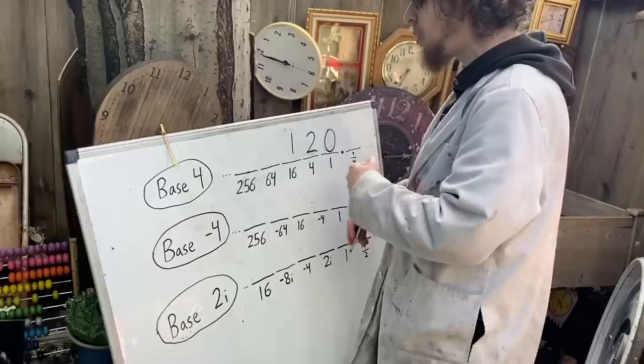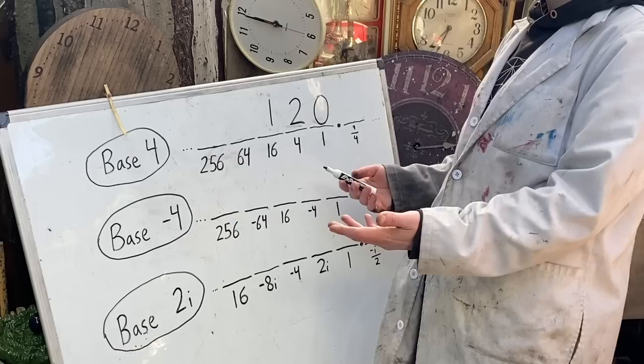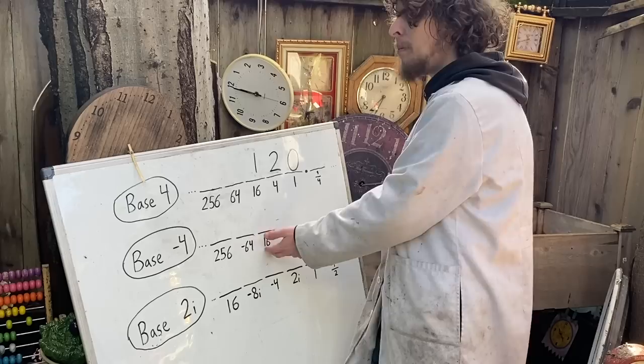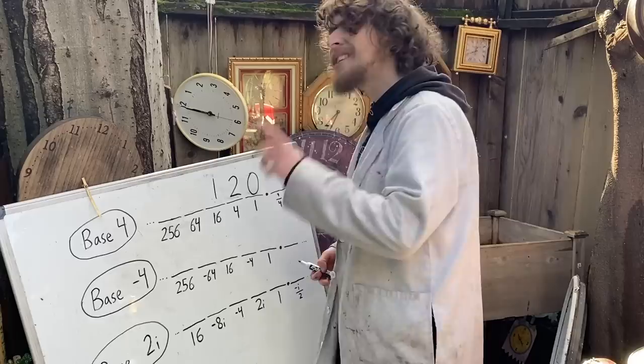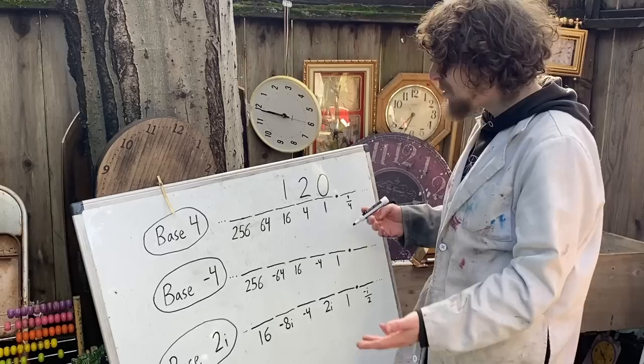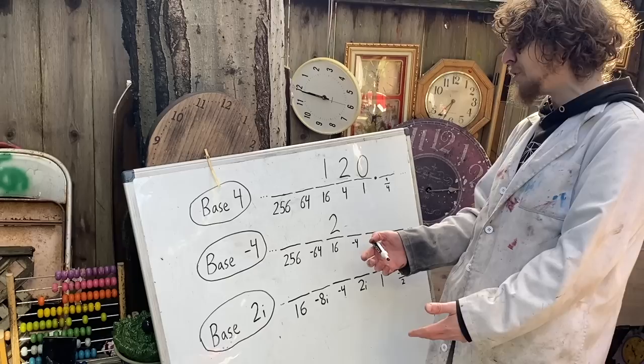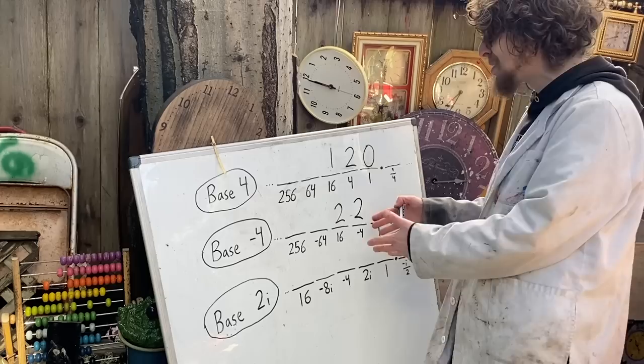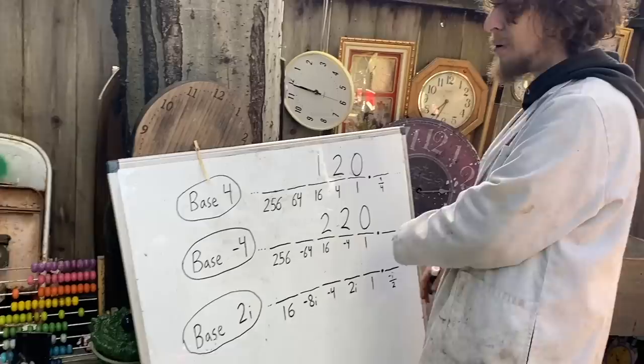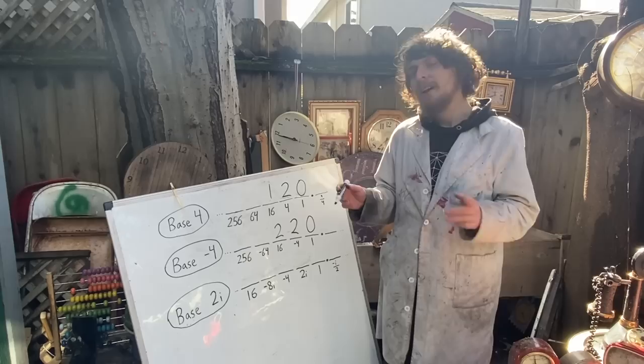Now in base negative 4, our spots alternate from positives to negatives. Because negative 4 to the 0th power is 1, and negative 4 to the 2nd power is 16, but to any odd power is negative. But we still are able to use these strange tools to assemble 24. What we have to do here is take 2 of the 16s, which adds up to 32, and then 2 of the negative 4s, which gets us back to 24, and nothing else. So 2, 2, 0 would represent the number 24 in base negative 4.